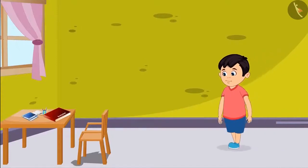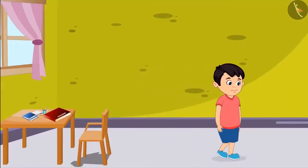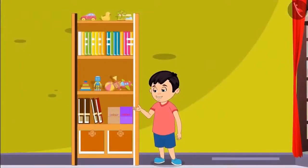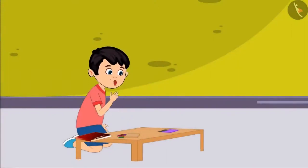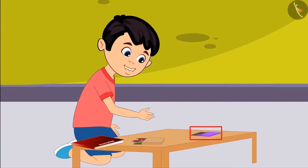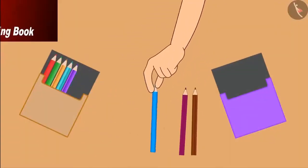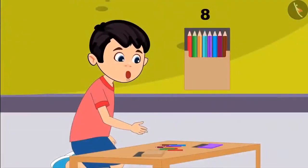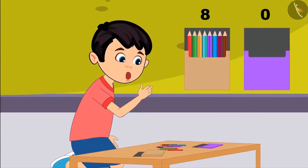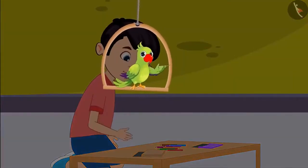Today Chotu found his coloring book and went to get his two color boxes from his almirah. One box had no colors in it at all. He counted the colors in the other box: one, two, three, four, five, six, seven, eight — this box has eight colors, and the other box is empty, meaning zero colors. Children, can you tell how many colors Chotu has in total?